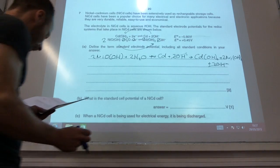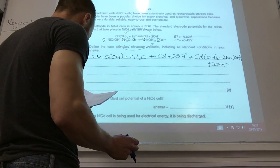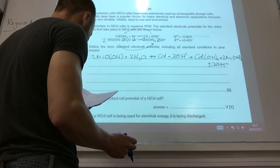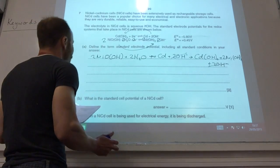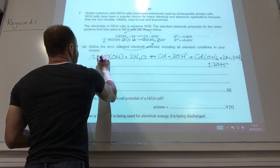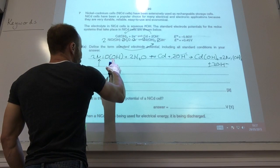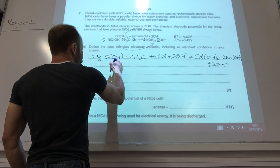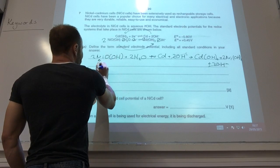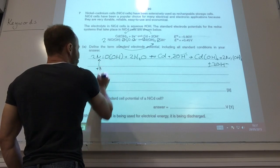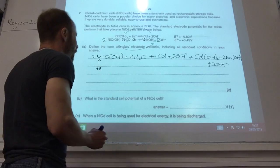We've got the equation now and now it wants me to show, using oxidation numbers, show the species that have been oxidized and reduced. So let's try and work out my oxidation numbers here. Oxygen is minus 2, so that's minus 4 overall plus 1 there. So nickel must be plus 3 overall.